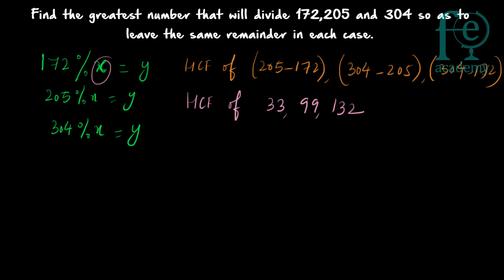Without long division, you can see: the HCF of 33 and 99 is 33, and 132 is also a multiple of 33 since 33 × 4 = 132. So the HCF of 33, 99, and 132 is 33, and that is your required answer. Remember: when asked for the greatest number so that three numbers leave the same remainder, find all combinations of pairwise differences and compute their HCF.